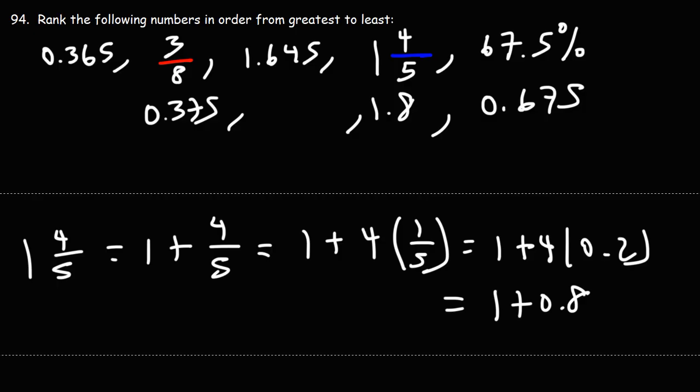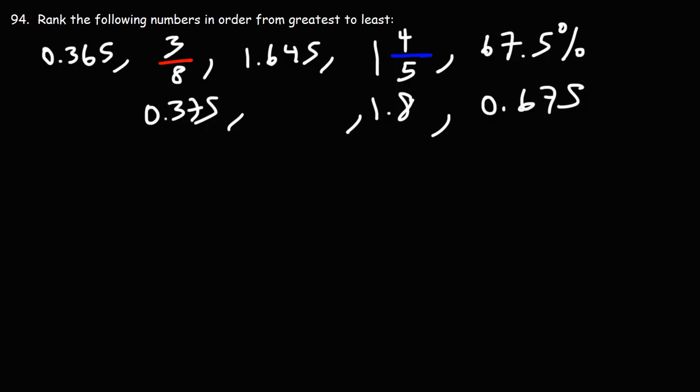So now we could rank it from greatest to least. So we'll put the large numbers on the left, the small numbers on the right. So let's start with the largest number. The largest number is going to be 1.8. The original number associated with that is 1 and 4 fifths.